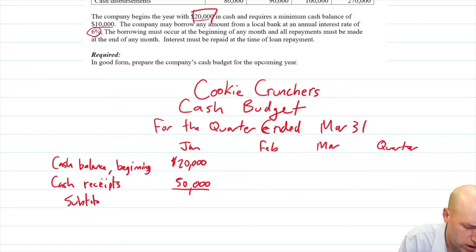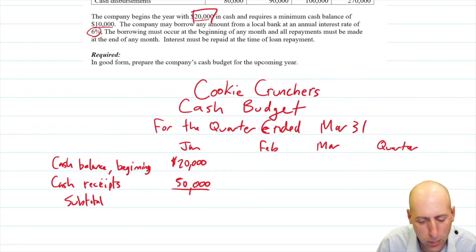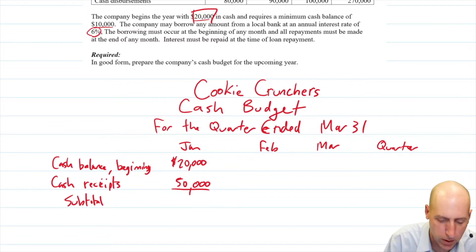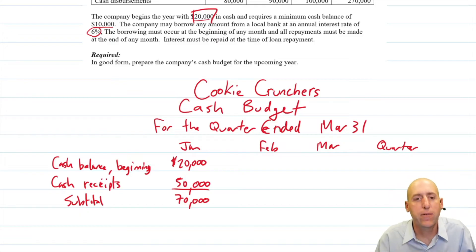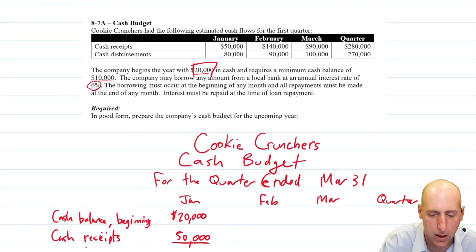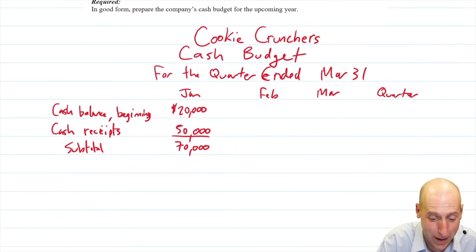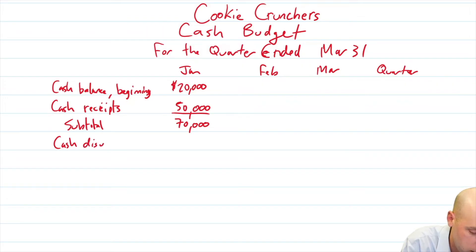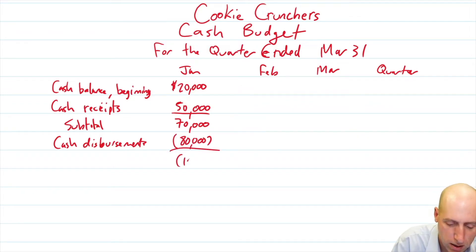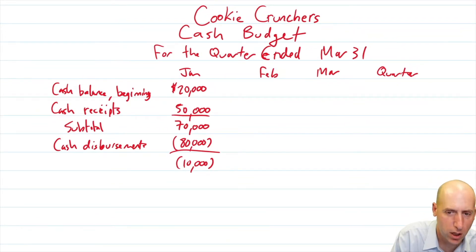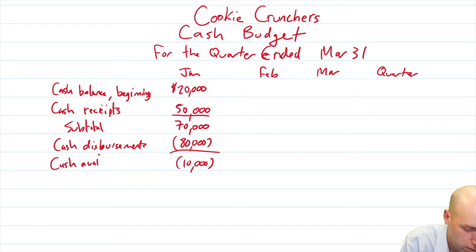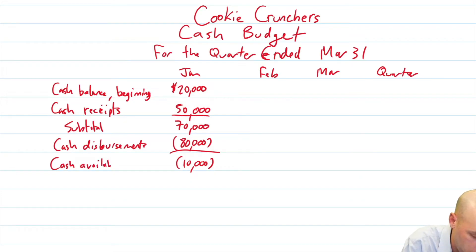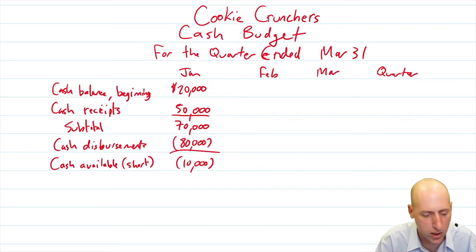We'll do a subtotal here — we could call this 'cash available.' 20 plus 50 is 70, so we have $70,000 to spend. How much are we planning to spend? We're planning to spend $80,000 — that's a bad sign. Cash disbursements: our cash spent is more than we got. We are $10,000 short on cash. So 'cash available' is in brackets — we're short. Since we're short on cash, we're going to have to do some financing.